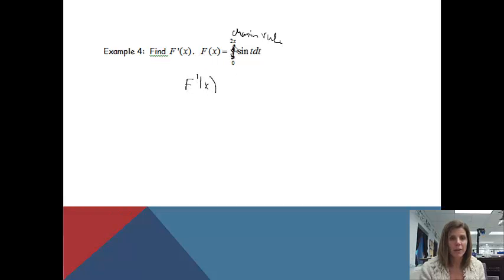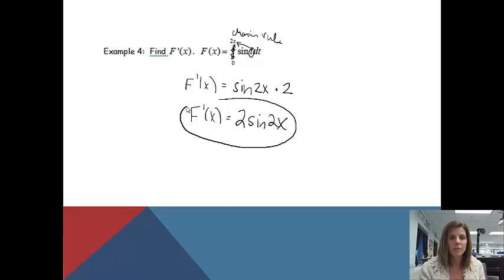So I'm going to be left with a sine. I replace my variable by what's up there, which is 2x. And now I have to multiply by the derivative of that 2x, which is 2. So if I just rewrite this problem so it looks a little cleaner, it'll be 2 sine of 2x. And that is all there is to it. So hopefully now you can use the second fundamental theorem of calculus to solve problems.